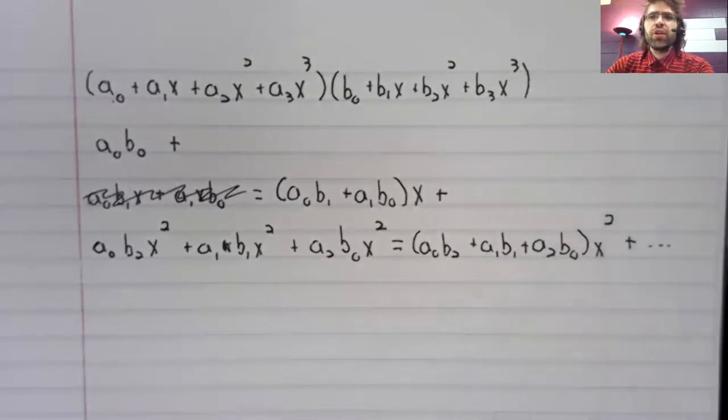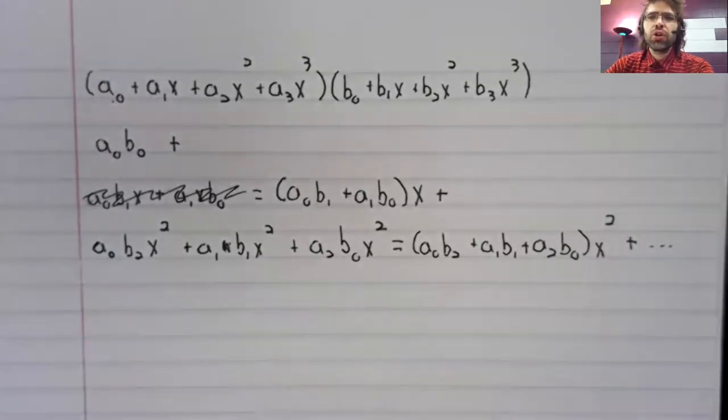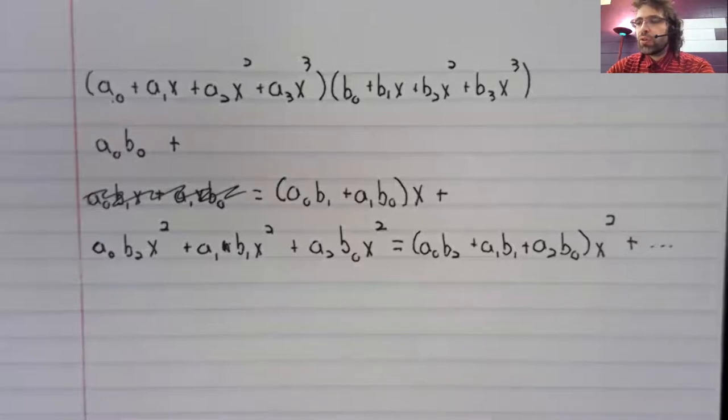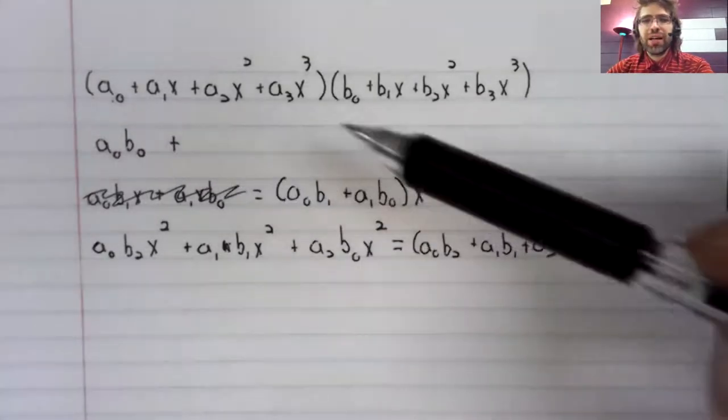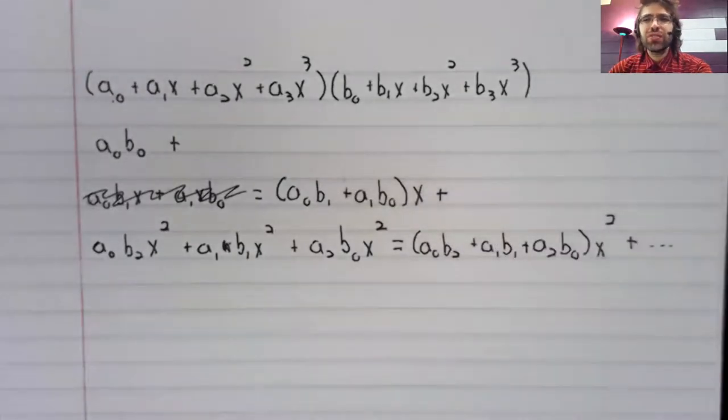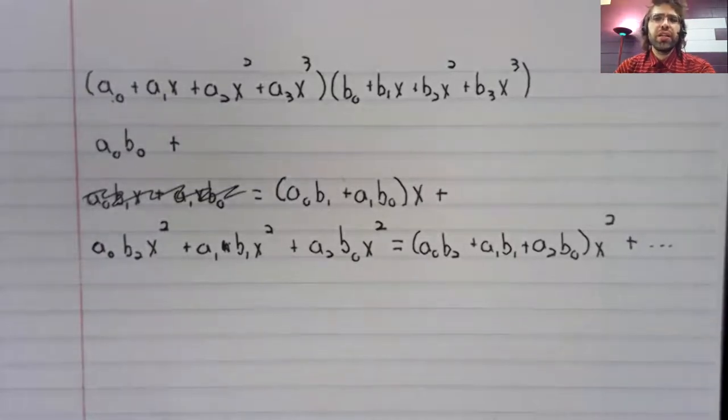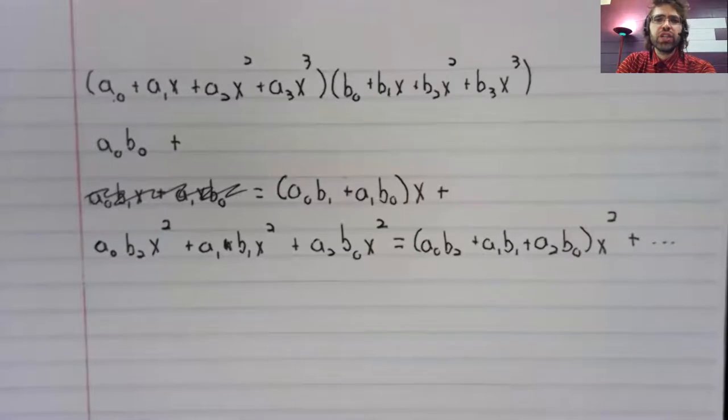And we could find the cubic term, the quartic term, the quintic term, and the sextic term in the same way. You'll notice that these are getting kind of more complicated as you go along, but you can do the multiplication in this fashion.